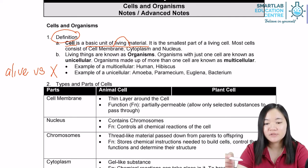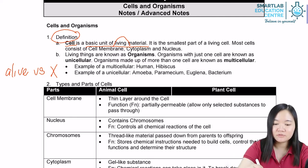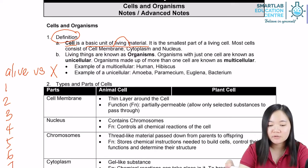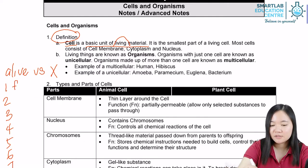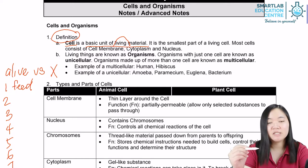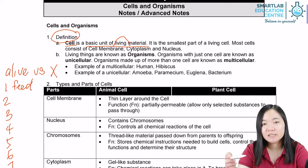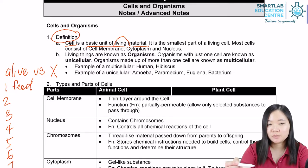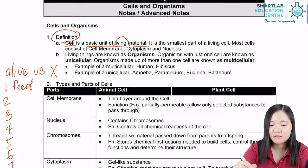Things that are alive tend to be able to carry out a total of seven functions. So what are the seven functions? First, living organisms feed — that means they eat food, whether it's vegetables or meat.